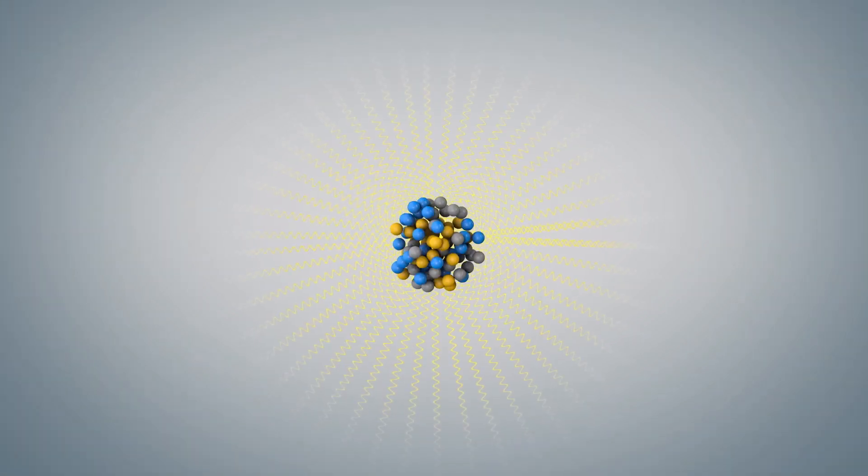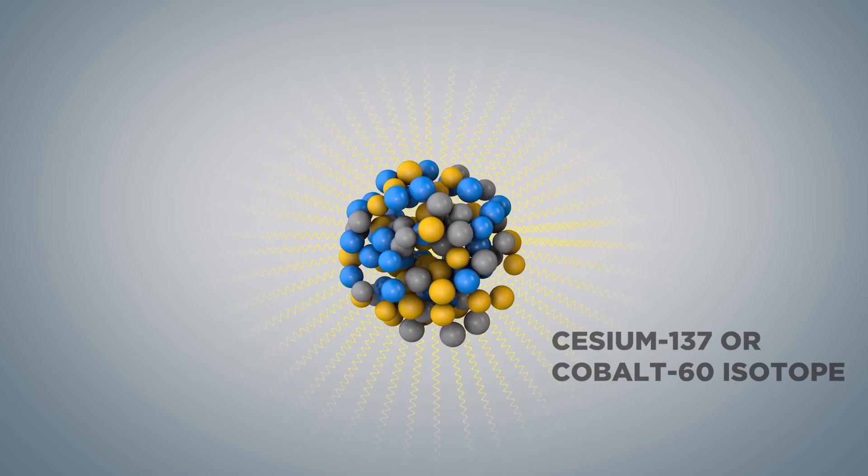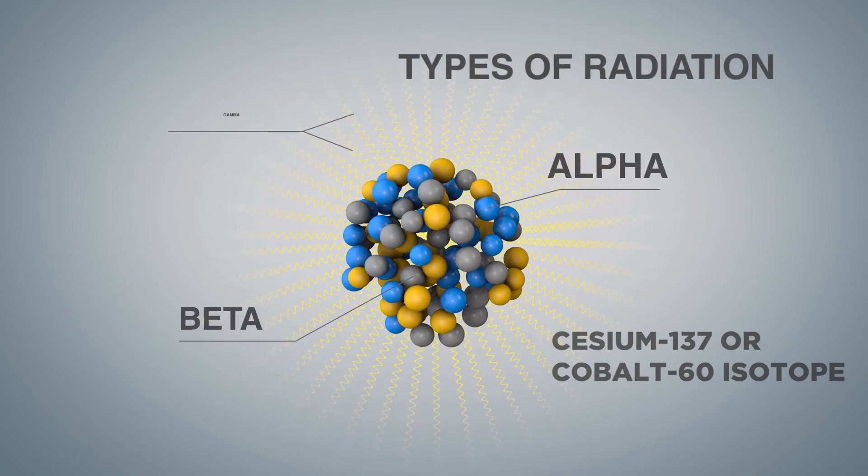Let's start with the basics. A radioactive isotope emits one of three different types of radiation: alpha, beta, and gamma.